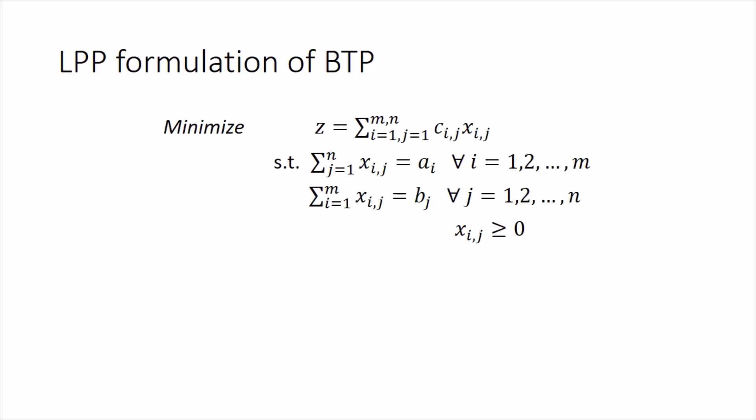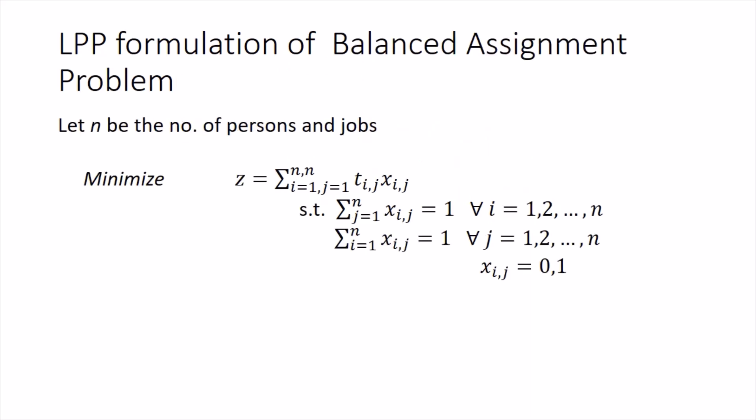A_i's and B_j's were denoting respectively the supplies and the demands there. This way we get our LPP formulation of balanced assignment problem in which C_ij has been replaced with T_ij because instead of cost we have time here. A_i's and B_j's both are equal to one because all supplies and demands are one. X_ij's can have just two values, either zero or one, which I have just explained to you. Here M is equal to N, the number of persons and number of jobs are the same.